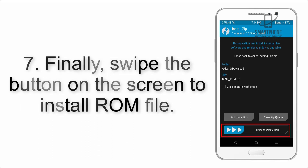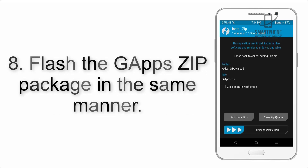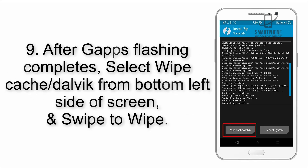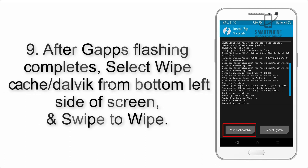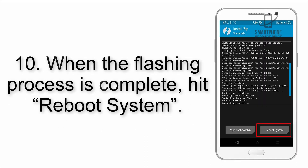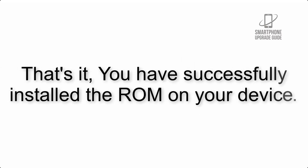Step 7: Swipe the button on the screen to install the ROM file. Step 8: Flash the GApps zip package in the same manner. Step 9: After GApps flashing completes, select Wipe Cache and Dalvik from the bottom left side of the screen and swipe to wipe. Step 10: When the flashing process is complete, hit Reboot System. That's it — you have successfully installed the ROM on your device.